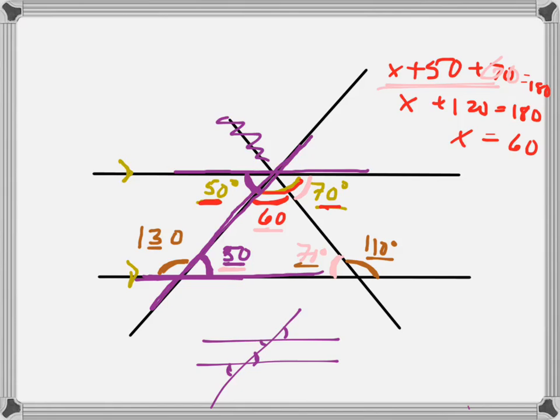And then you could also find other angles but they didn't ask us for any more. So that's how you solve a triangle with parallel lines.